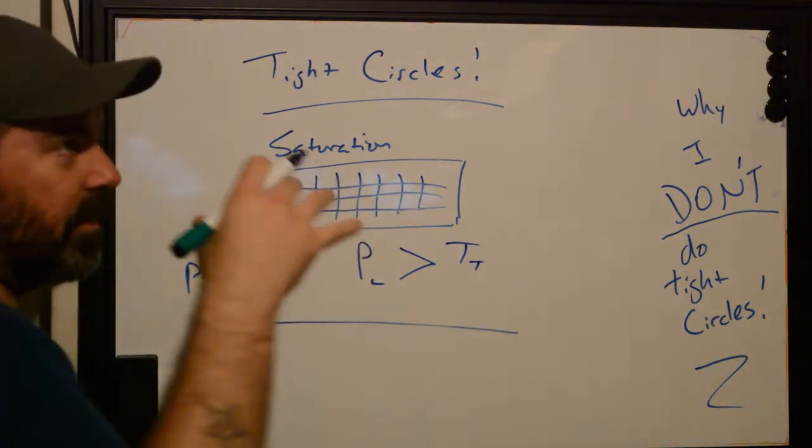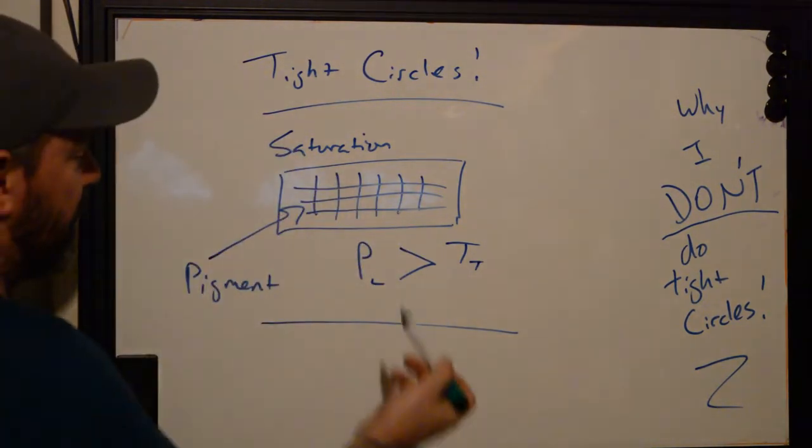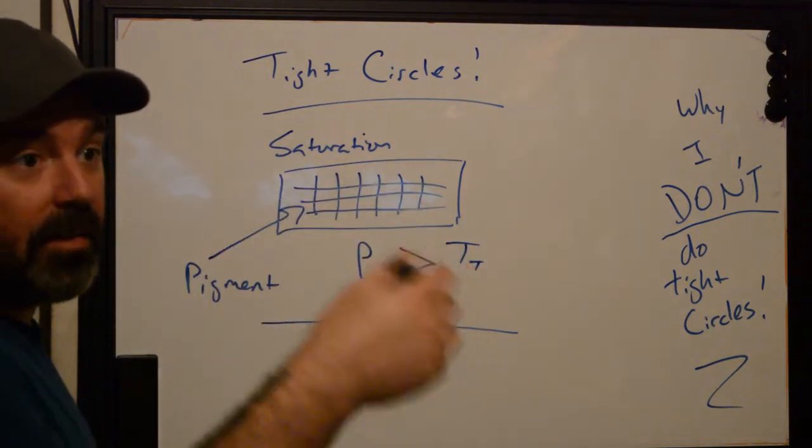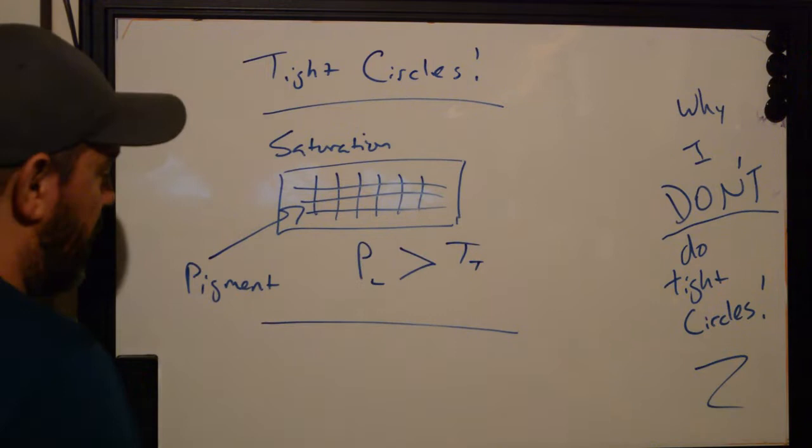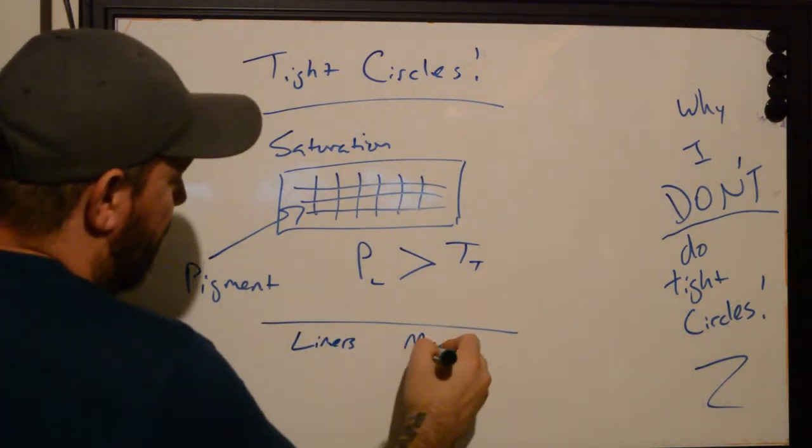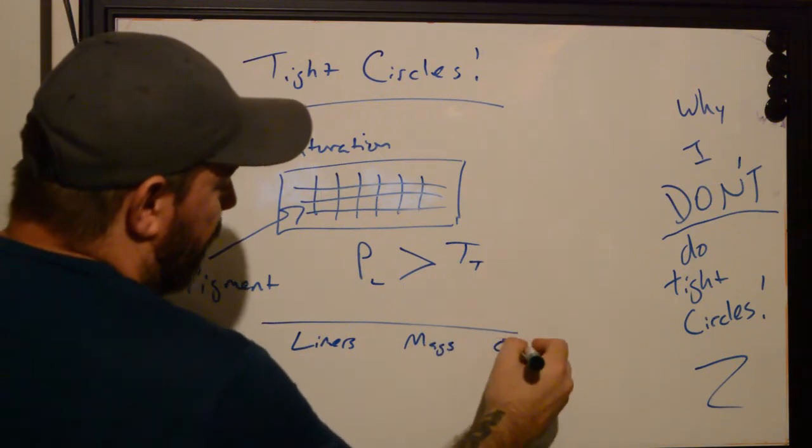How we break this down is based on types of groupings because the groupings are really going to influence how much pigment is going to go into the skin based on how long the needle is going to be actually interacting with it. So if we have liners and we have mags and then we have oversized.